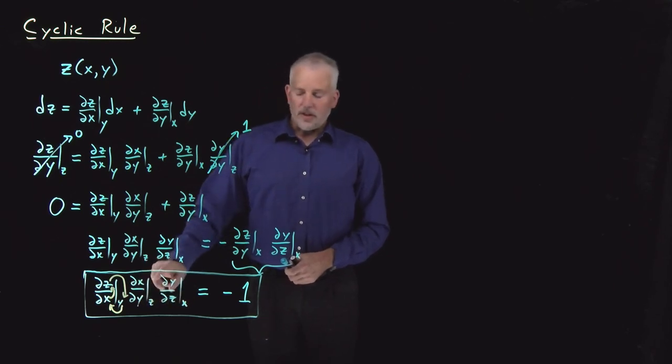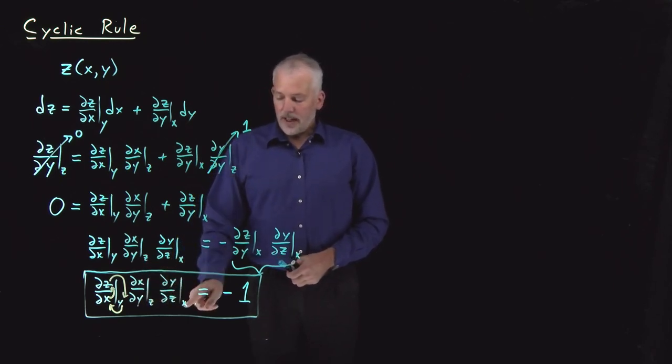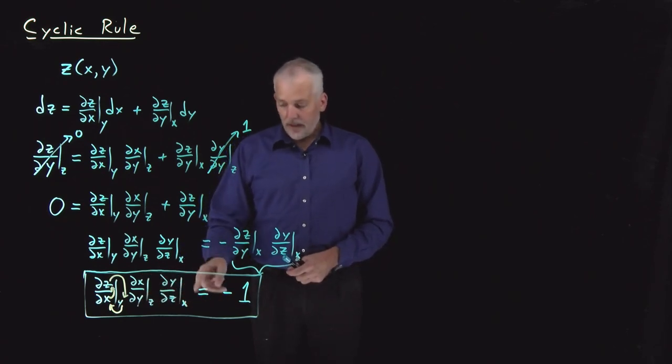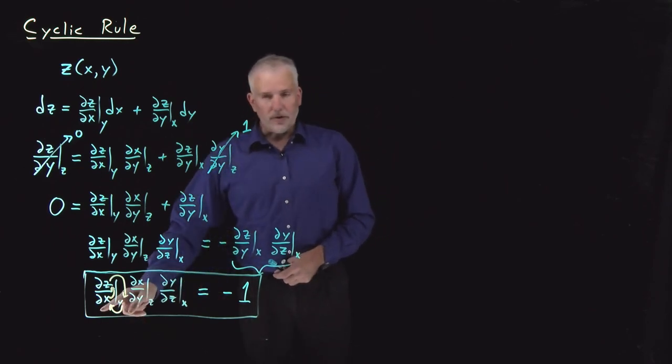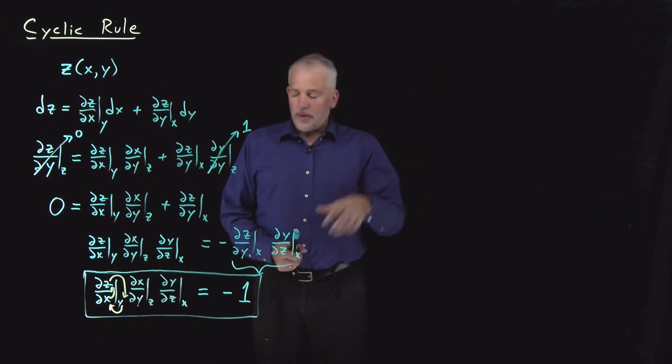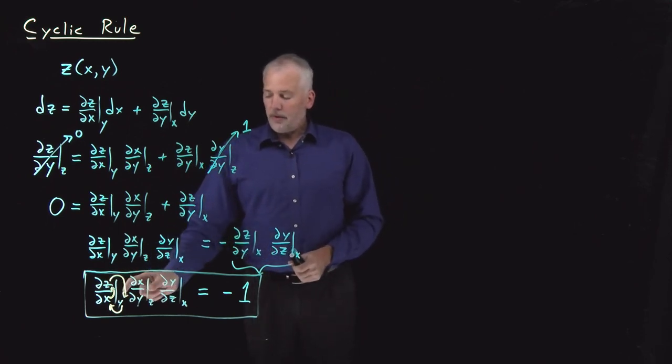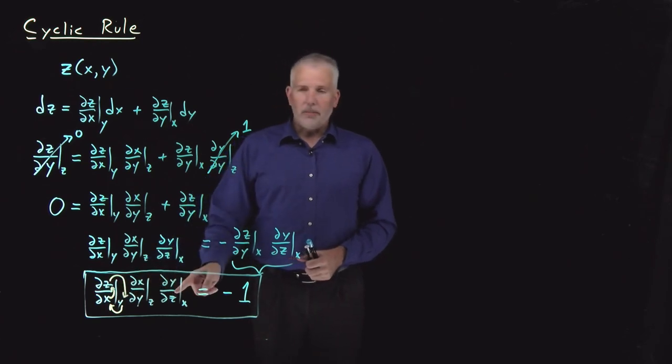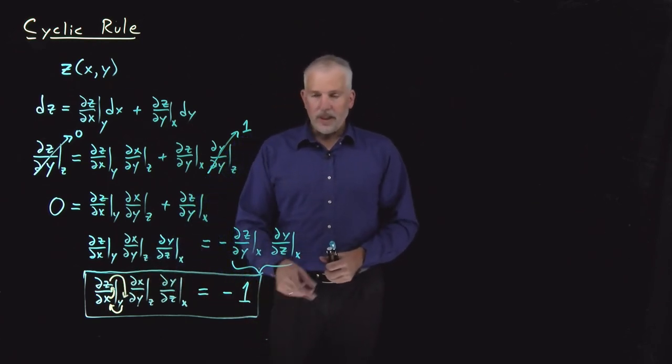If I move them in a cycle again, so that x moves down, y moves up, and z moves to the denominator, I'll get ∂y/∂z at constant x. If I were to do the cycle again, I'd get back to the first one I started with. So if I keep cycling the variables around, then the three different partial derivatives I can get by cycling those variables, multiply them all together, and what they come out to be equal to is negative one.